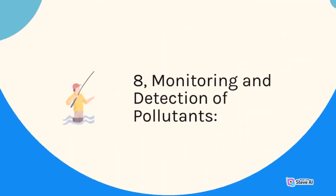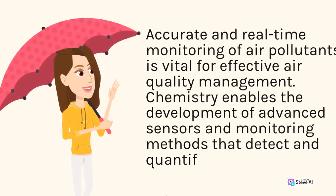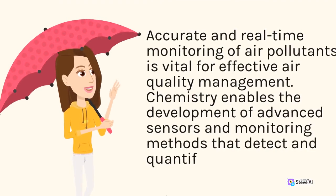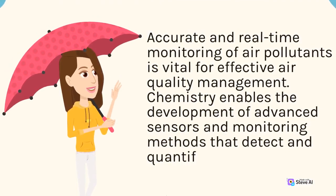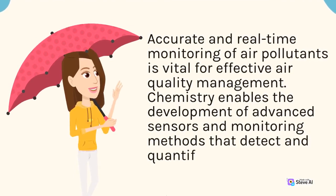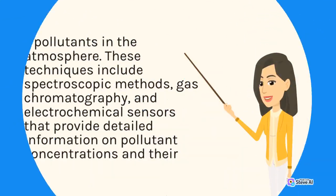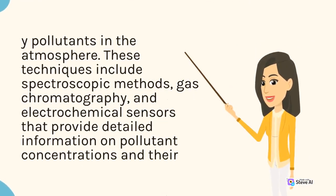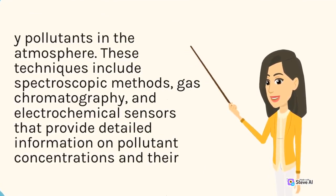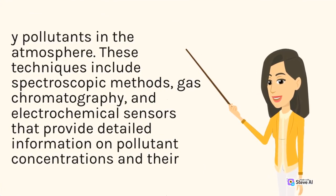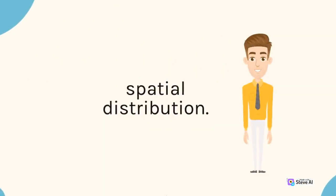8. Monitoring and Detection of Pollutants. Accurate and real-time monitoring of air pollutants is vital for effective air quality management. Chemistry enables the development of advanced sensors and monitoring methods that detect and quantify pollutants in the atmosphere. These techniques include spectroscopic methods, gas chromatography, and electrochemical sensors that provide detailed information on pollutant concentrations and their spatial distribution.